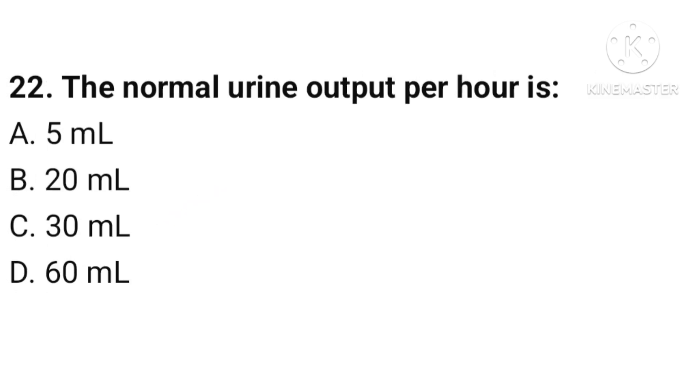The normal urine output per hour is? Correct option is C.